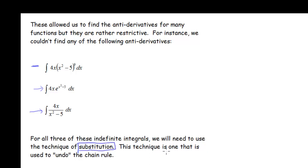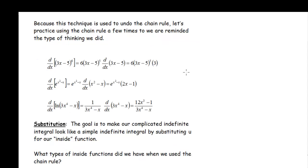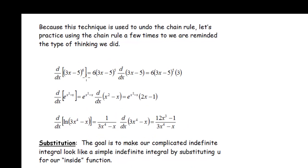This technique is the one that we use to undo the chain rule. So if you had to take the derivative using the chain rule, chances are you're going to have to use substitution to do the anti-derivative. Because this technique is used to undo the chain rule, let's practice using the chain rule a few times so we're reminded how we did this.